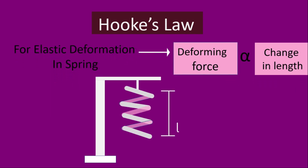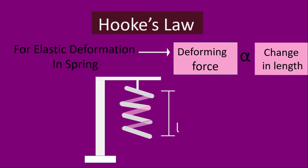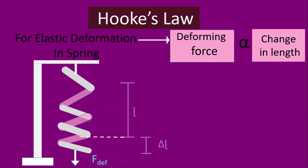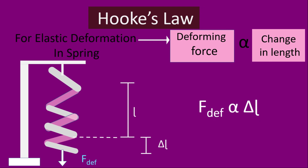Let's consider a spring whose length is L. By the application of a deforming force, we increase the length by delta L, where delta L is the change in length. According to Hooke's law, the deforming force is directly proportional to the change in length, so we can write F of deforming force is directly proportional to delta L.